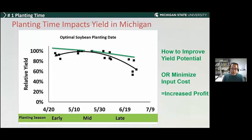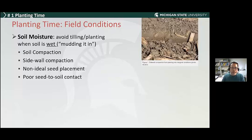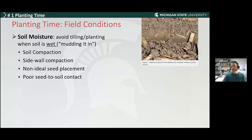Field conditions are really important for planting time. Number one is keeping an eye on soil moisture — making sure we are not planting into too wet a field and causing soil compaction and other issues. That happens when we try to muddy the seed into the ground trying to get ahead of the optimal planting window. This can also lead to non-ideal seed placement and poor seed-to-soil contact, which is one of the most important goals at planting. If we don't achieve this, we are not setting ourselves up for high yield potential, and that will stay with us for the rest of the growing season.